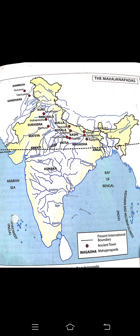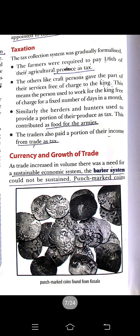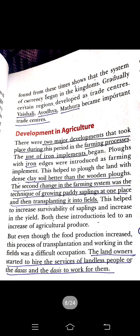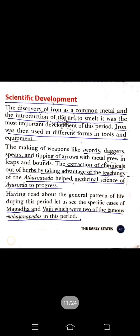The Mahajanpadas were governed in two different ways. The first one is monarchical governance and the second one is the republican form of government. We have already read about the expansion of territories, maintaining armies, taxation, currency, growth of trade, development in agriculture, the social evil of class discrimination, and scientific development.